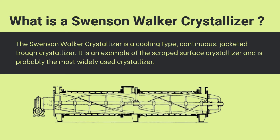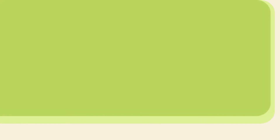The Swenson Walker crystallizer is one of the most widely used types of crystallizers worldwide. It is a continuous cooling type of crystallizer provided with a jacket throughout. It is an example of a scraped surface crystallizer, meaning it is equipped with a scraper that removes the accumulation of crystals on the inner surface of the crystallizer.